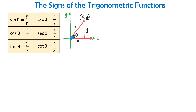Sine of angle theta is the opposite side y divided by hypotenuse r. Cosine of angle theta is the adjacent side x divided by hypotenuse r. And tangent of angle theta is the opposite side y divided by the adjacent side x. We also have cosecant, secant, and cotangent, and these functions are reciprocals of sine, cosine, and tangent.